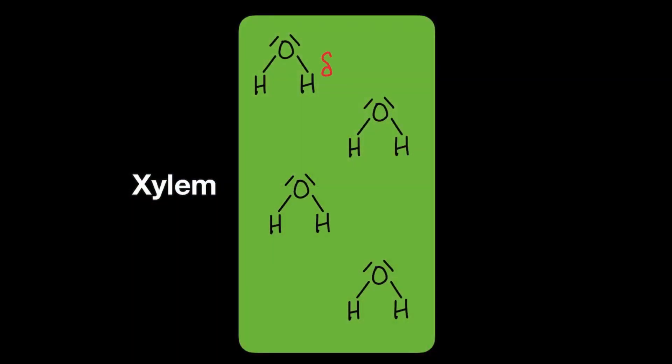For example, within the xylem you find that the water molecules are attracted to one another because the hydrogen is slightly positive and the oxygen slightly negative. So this creates a hydrogen bond between them, and we say that there is cohesion between the water molecules.